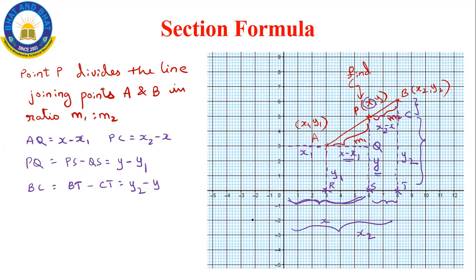This part is just warm-up for the section formula. The game has not started yet. Now I have to consider two triangles: triangle APQ and triangle PBC. In these triangles, angle AQP = angle PCB = 90 degrees. And angle PAQ = angle BPC because lines PC and AQ are parallel — so these are corresponding angles. Therefore triangle AQP is similar to triangle PCB by AA similarity.